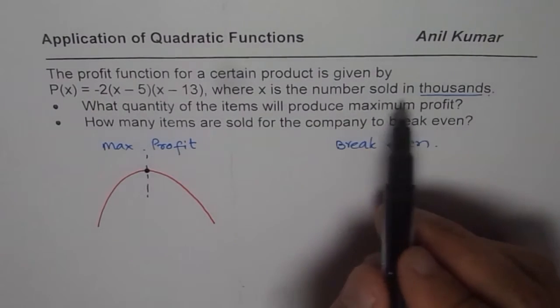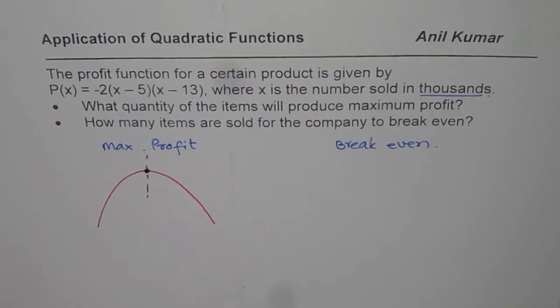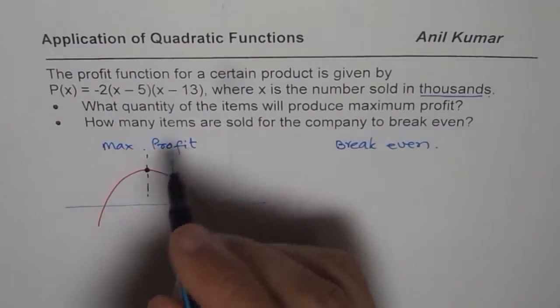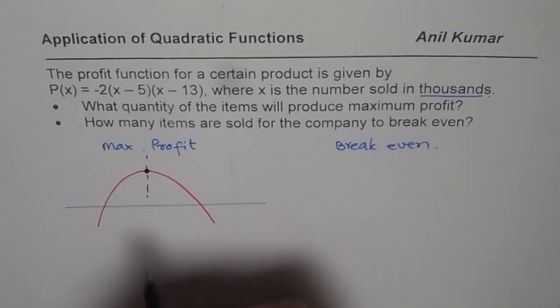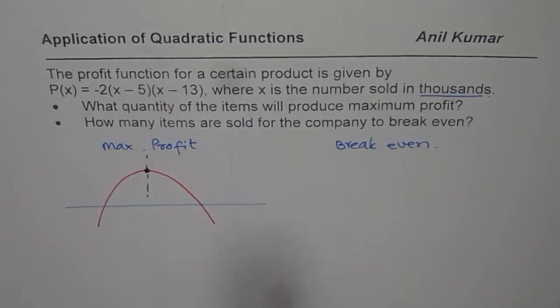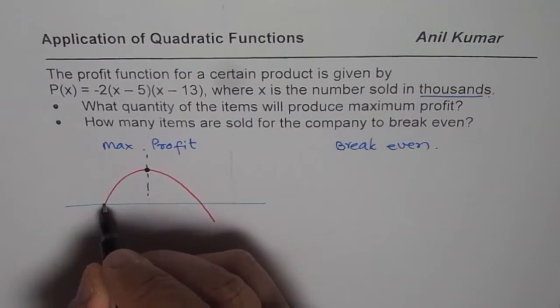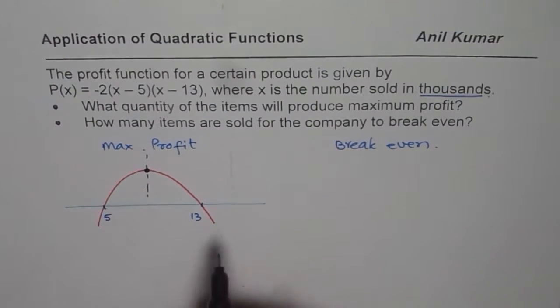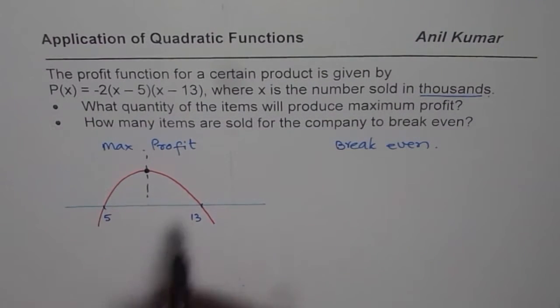In our case, we only need to find number sold. Number sold is just the x value. So, x value here will be average of the two intercepts. First one for us is 5. The other one is 13. So if you add that, divide by 2, you get the number in between.